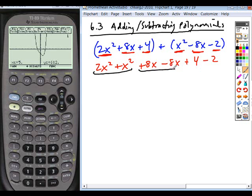And then 8x and negative 8x cancel, and then plus 4 and minus 2, and so that gives you your total. Okay, so if you have to do this without a calculator, what I would suggest...